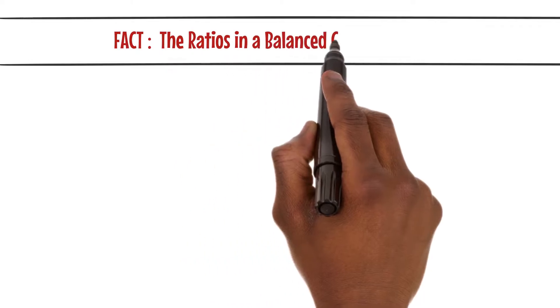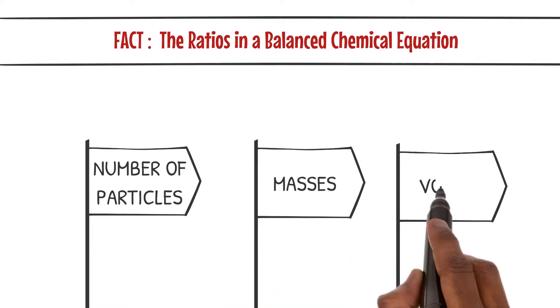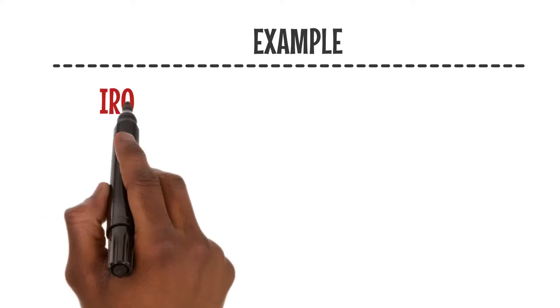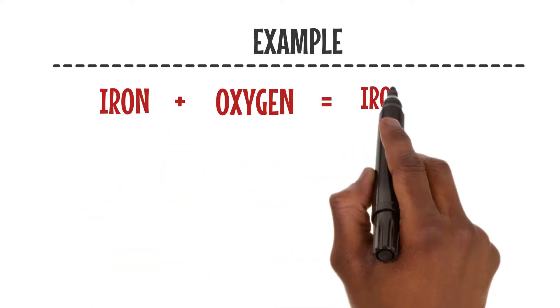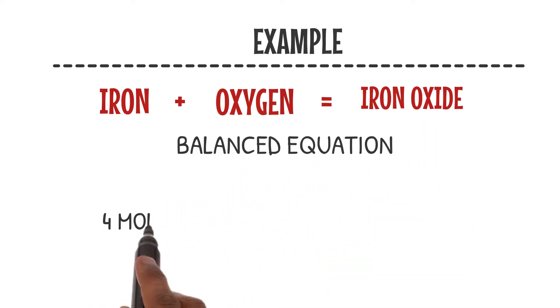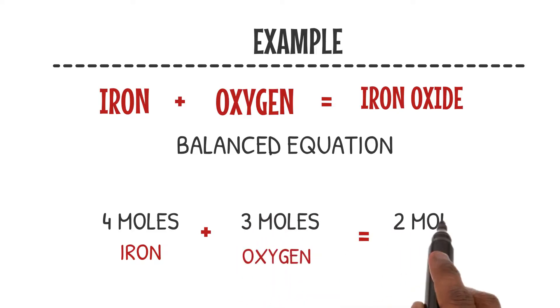The ratios in a balanced chemical equation apply not only to the number of particles but also to their masses and volumes. It's like a mathematical dance between the elements. Let's take an example: the reaction of iron with oxygen to form iron oxide. The balanced equation tells us that four moles of iron react with three moles of oxygen to produce two moles of iron oxide.